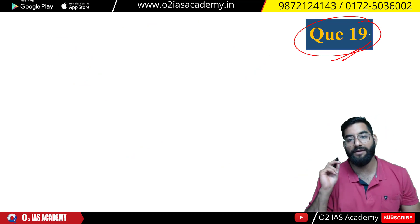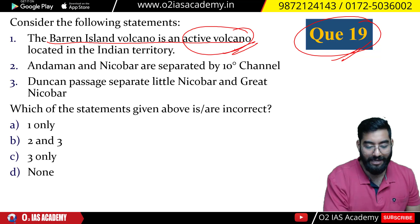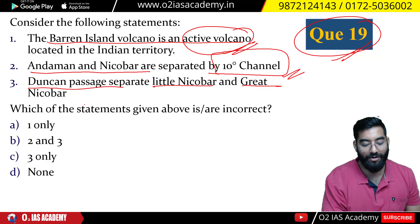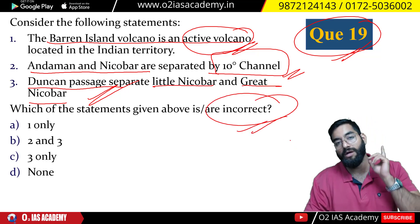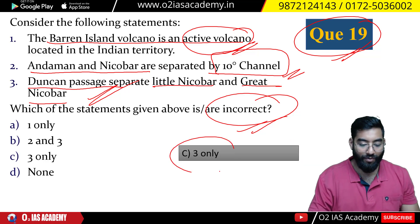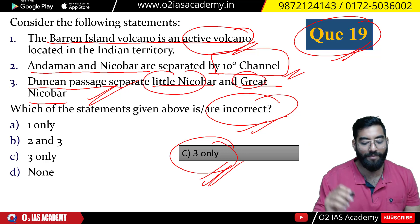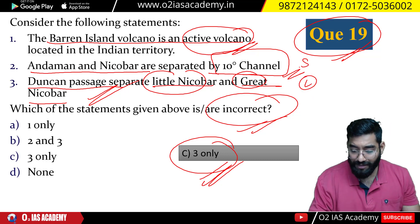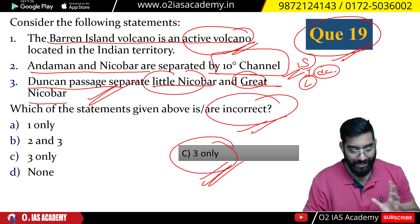Question number 19: Consider the following statements — Barren Island volcano is found in Indian territory in Andaman and Nicobar; Andaman and Nicobar are separated by the 10-degree channel; Duncan Passage separates Little Nicobar and Great Nicobar. Identify the incorrect statement. The answer is three only — Duncan Passage actually separates South Andaman and Little Andaman, not Little Nicobar and Great Nicobar.